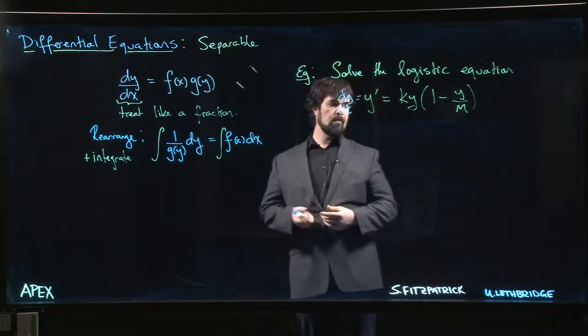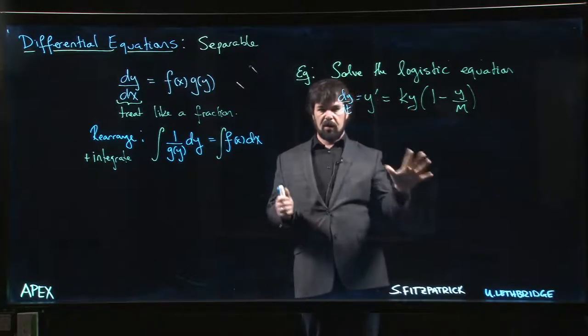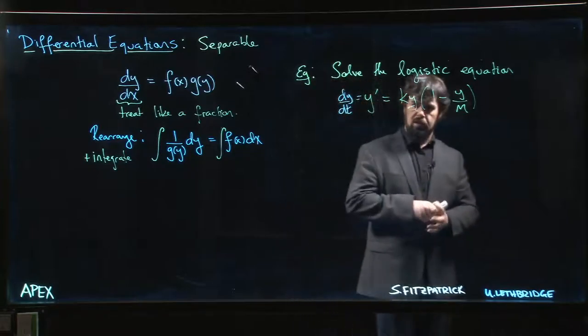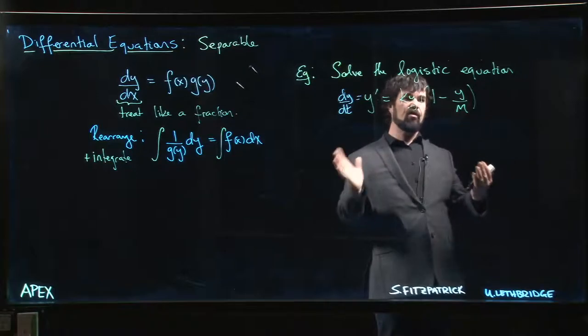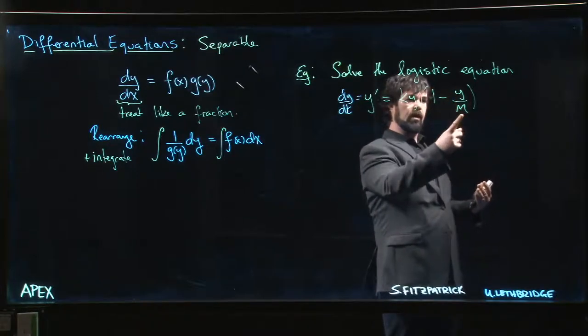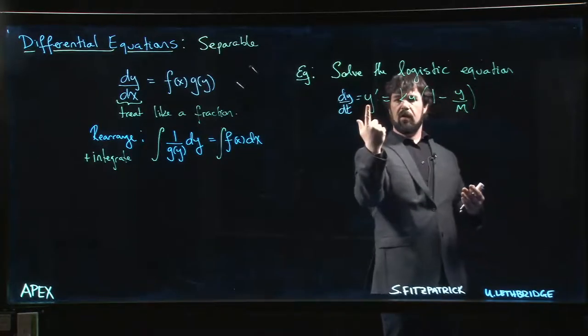So that maximum is here. That value M is representing sort of the maximum for the population. And if you just kind of think about what the equation is trying to tell you, you can sort of see how this works. You have sort of an initial growth rate of k and the population is growing. If y is small then this term here, if y is small relative to M, then this term doesn't really factor into the equation initially and your value for dy/dt essentially matches that exponential growth model.